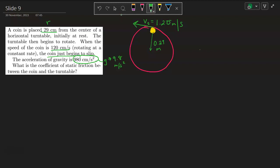What is the coefficient of static friction between the coin and the turntable? We are looking for static friction. What is mu sub s? That's what we're going to solve for.